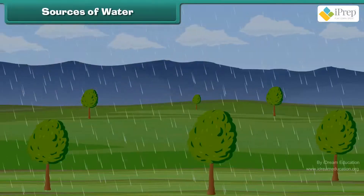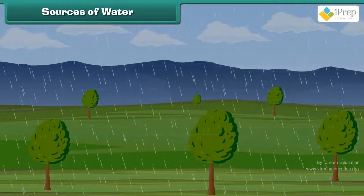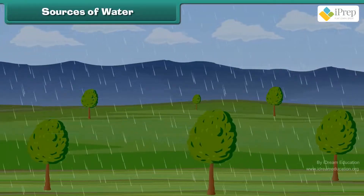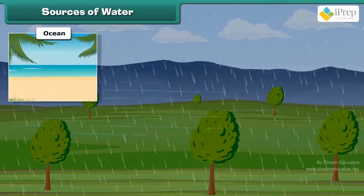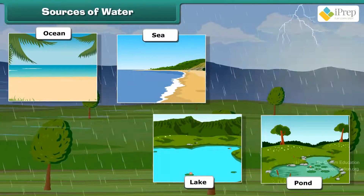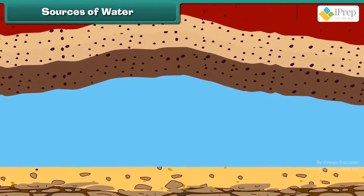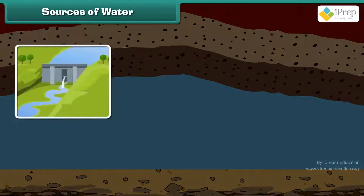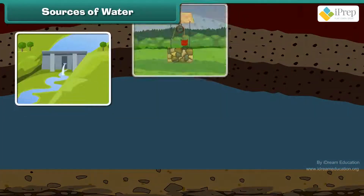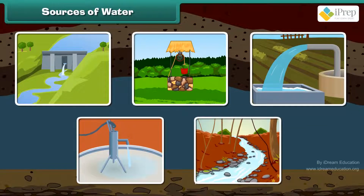Water falls from the sky as rain and fills up oceans, seas, lakes and ponds. It is also found deep under the ground. Dams, wells, tube wells, hand pumps and canals are man-made resources of water.